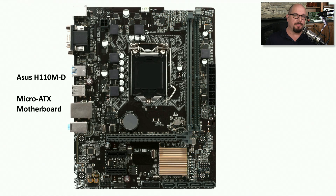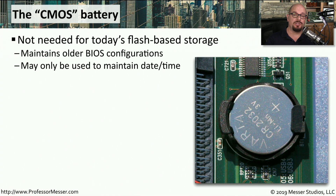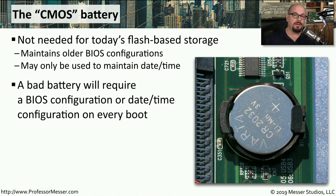If you look closely at the motherboard of your computer, you'll probably see there is a battery on the motherboard. On this particular motherboard, it's right next to the CPU. Since we're not using CMOS to store BIOS configuration settings, this battery is most commonly used to maintain the date and the time on this computer. These batteries can last for years, but if the battery does lose its charge, you'll find that your computer is not able to maintain the date and time if you happen to remove the power from your computer.